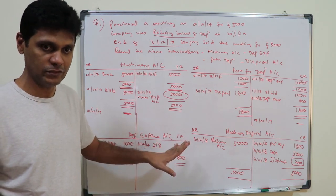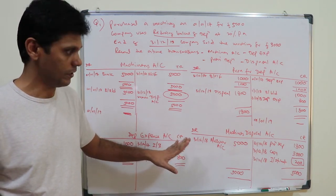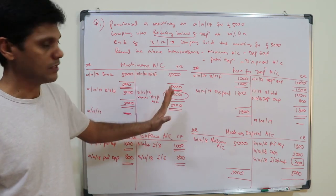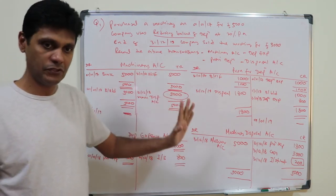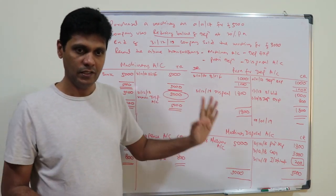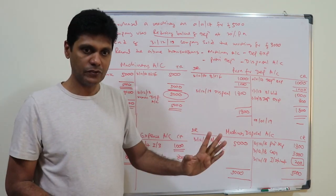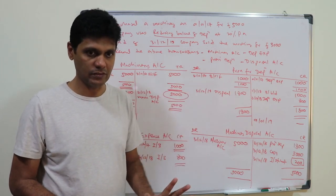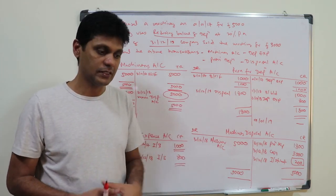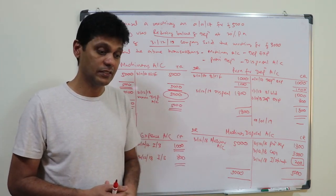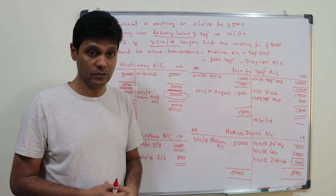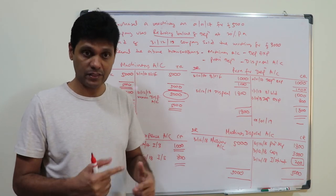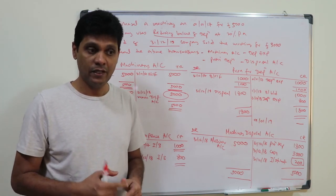I hope you understood that clearly. If you have any questions, please ask. We have now discussed depreciation, accounting for depreciation, and disposal. We will also discuss certain questions from the textbook.